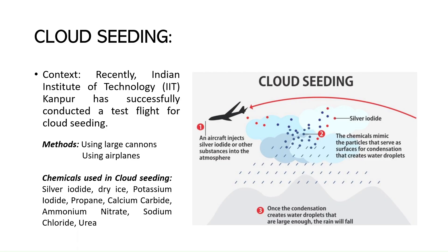IIT Kanpur has successfully conducted a test flight for cloud seeding, which is done through chemicals like silver iodide, dry ice, and potassium iodide. These chemicals are used to provide a surface for condensation, allowing cloud droplets to form, which eventually leads to artificial rain.